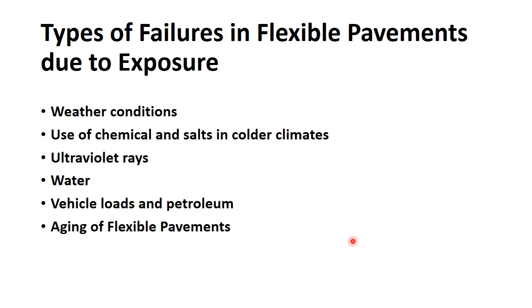Types of failures in flexible pavement due to exposure to weather conditions: changes in weather impose distress in flexible pavements. Use of chemicals and salt in colder climates, frost heave, and stripping of asphalt due to snow and ice result in potholes and other distress. Ultraviolet rays cause the pavement to undergo oxidation, bringing it to a brittle state. On a hot sunny day, pavement temperature can be up to 140 degrees Celsius, which is the softening point of liquid asphalt. This causes the pavement to expand and move, allowing water through cracks into the base and subgrade, resulting in structural damage.